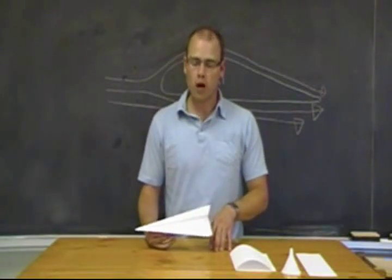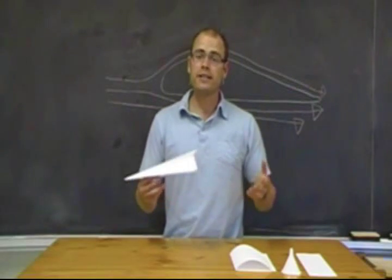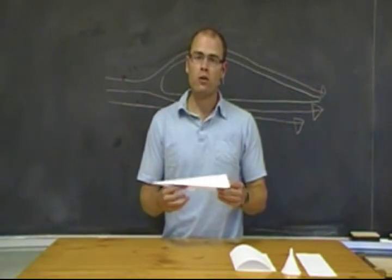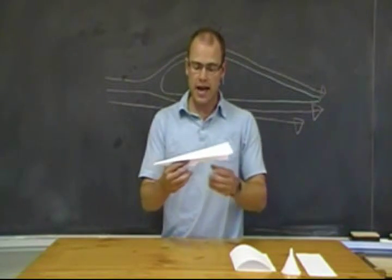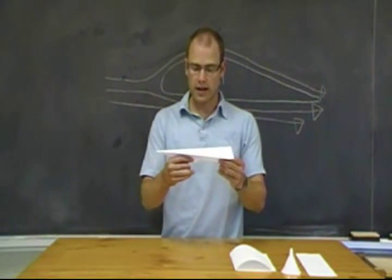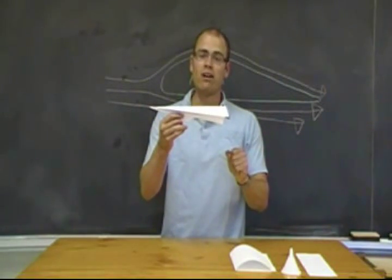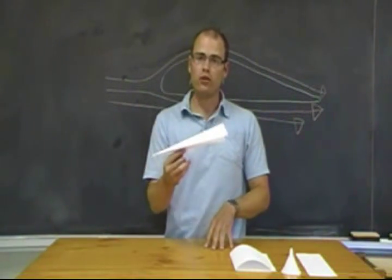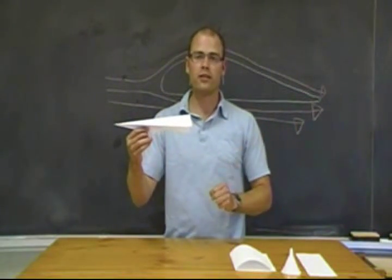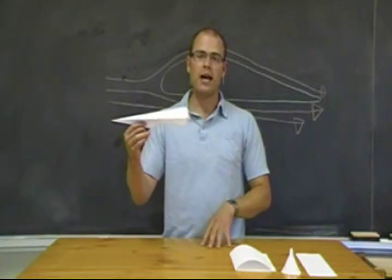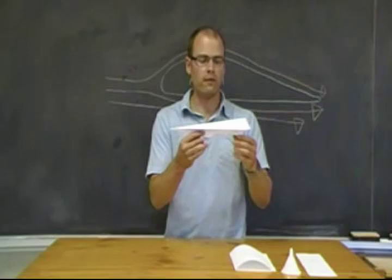Now let's answer one of the crucial questions within the flight unit: how do airplanes fly? It's essentially a tug of war between four main forces acting on an aircraft. That is the lift force, which allows an airplane to take off; the force of gravity, which pulls anything with mass down to earth; the thrust force, which propels an aircraft forward; and the drag force, which pulls it back as a result of air friction.